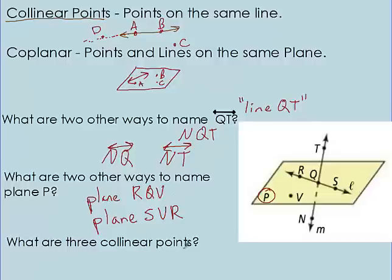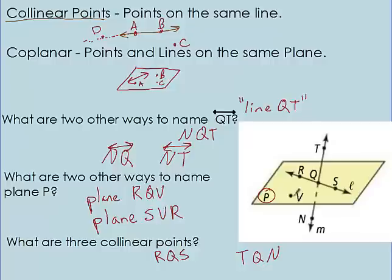What are three collinear points — three points that are on the same line? We have two options: R, Q, and S are on the line cutting through the plane. And we have T, Q, and N on the line that goes straight up and down through the plane. V is on the same plane but it's not in line with these other points; it's over by itself.